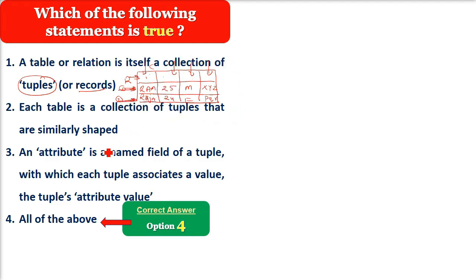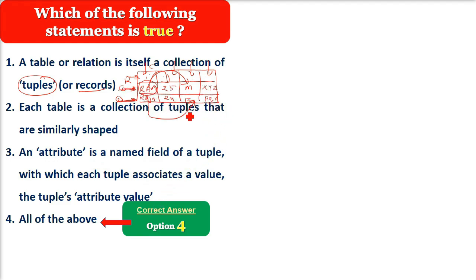Attribute کا مطلب ہوتا ہے — رام کا attribute کیا ہے؟ اس کی عمر 25 سال، وہ ایک مرد ہے — یہ اس کے attributes ہو گئے۔ رجنی کا attribute — وہ ایک عورت ہے، یہ اس کے attributes ہو گئے۔ رام کے تینوں attribute اور رجنی کے بھی تینوں attribute۔